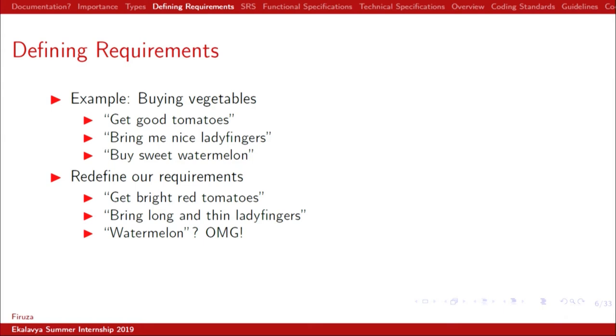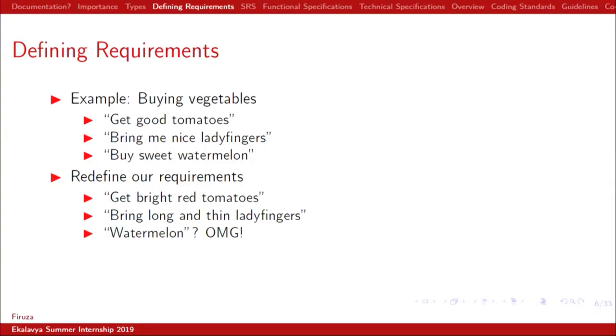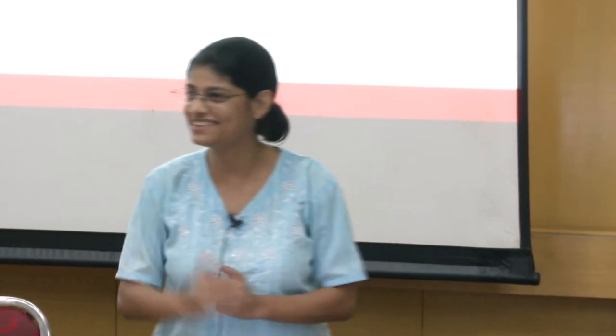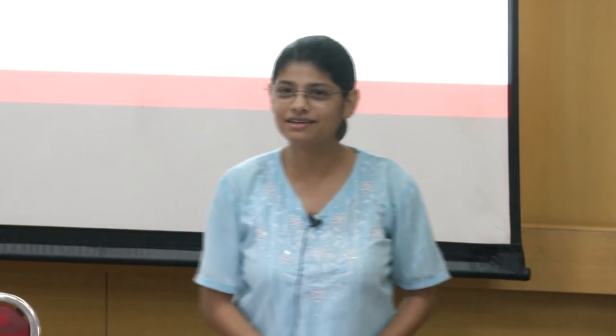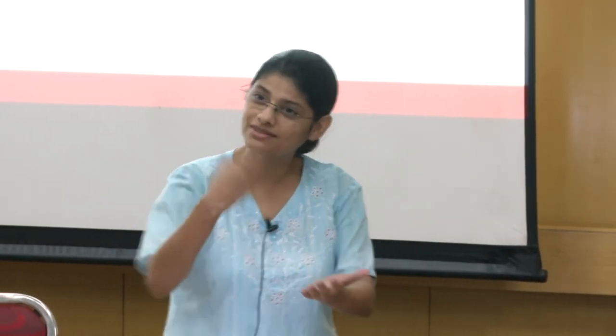So can we redefine our requirements? A better way of saying it is: get me bright red tomatoes. For lady's fingers: bring me long and thin lady's fingers. There was an incident where a friend was asked to go to the market and get lady's fingers — he brought thick and big ones. When he went home, he got a scolding. He didn't know what a good lady's finger was.